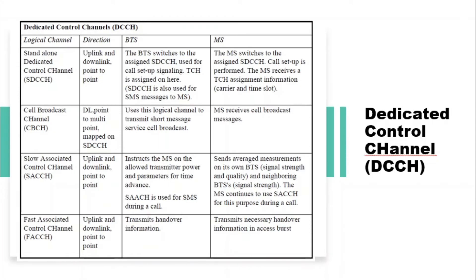For the MS and BSS to realize the call procedure, dedicated control channels are used before traffic channels in downlink and uplink are assigned. A Dedicated Control Channel (DCCH) is implemented, consisting of the Standalone Dedicated Control Channel (SDCCH), used for information exchange preceding a connection such as user authentication, location update, and traffic channel assignment.